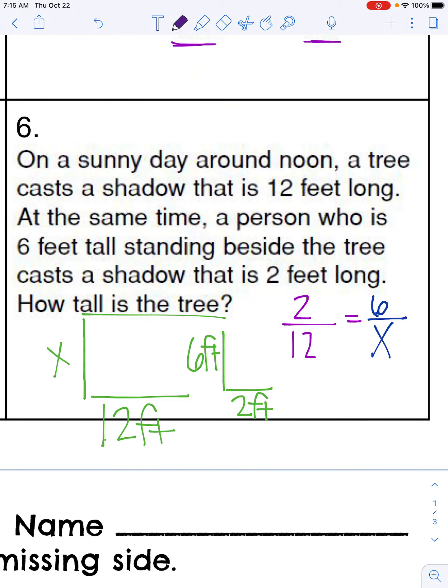So to get from our two to our six, we're going to multiply by three. And remember, if you can't just look and see that, you can always divide six divided by two, and that will show you that you're multiplying by three.